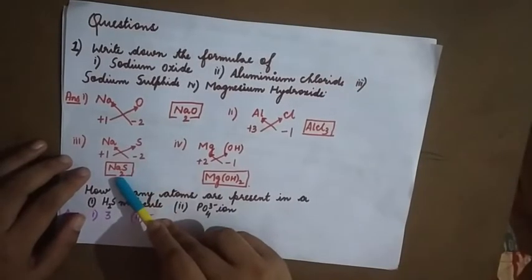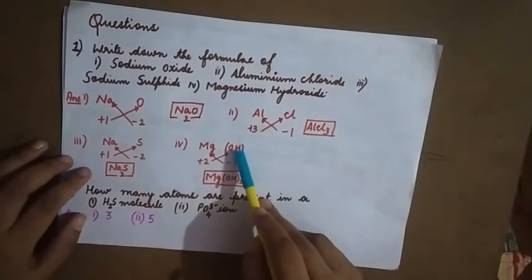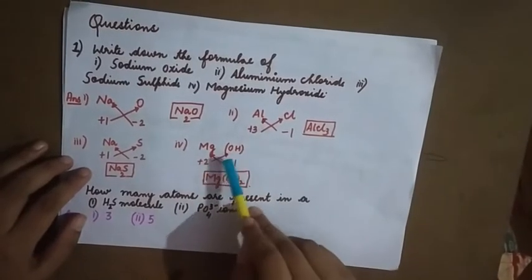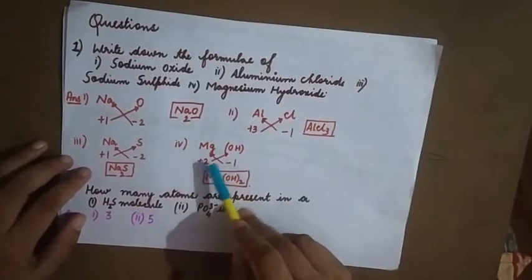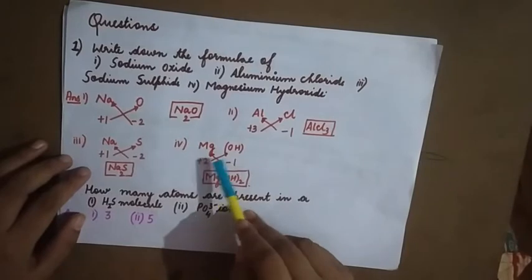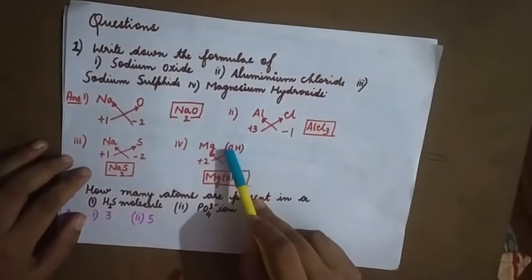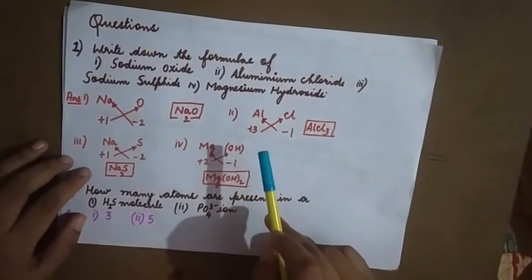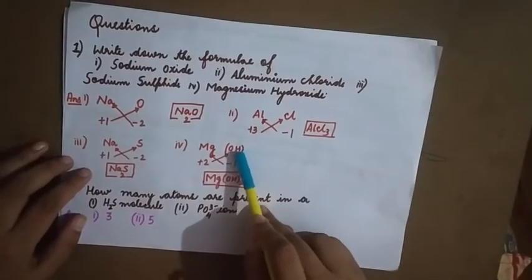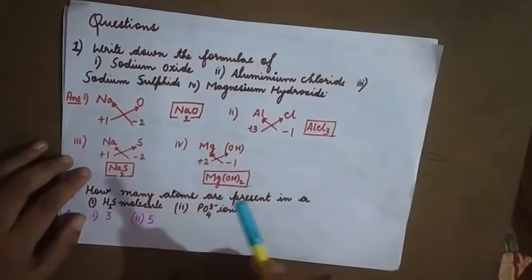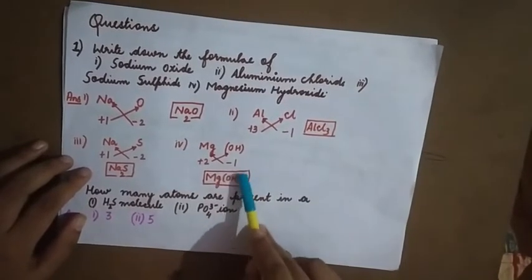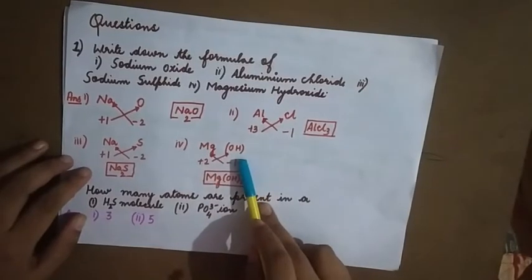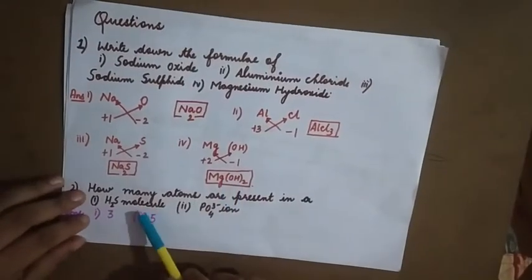Next, sodium sulfide: sodium is +1, sulfide is -2. When you criss-cross the valency it is Na₂S. For magnesium hydroxide, Mg valency is +2 and OH is -1. When you criss-cross, since OH appears more than once, you put it inside brackets. So the formula is Mg(OH)₂. Remember: if a polyatomic ion appears more than once, you must put it inside brackets.